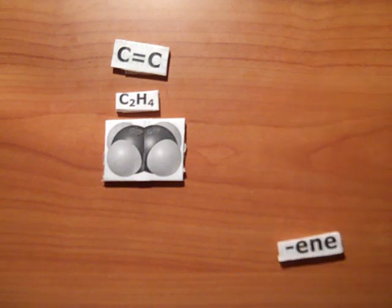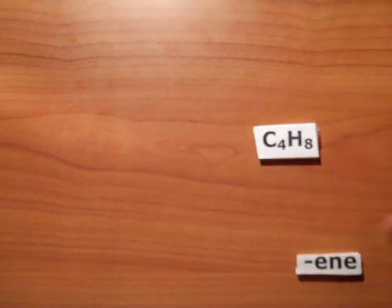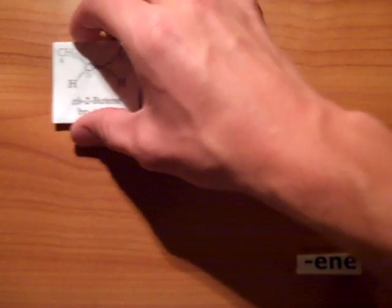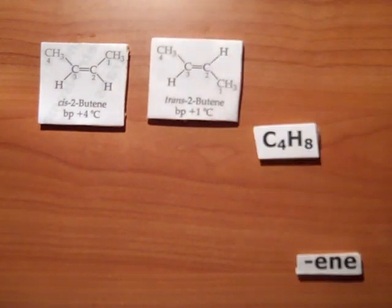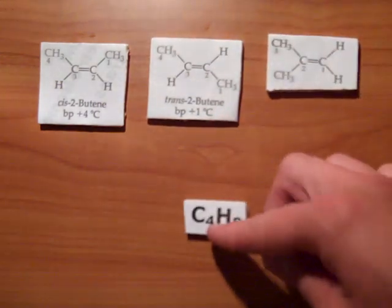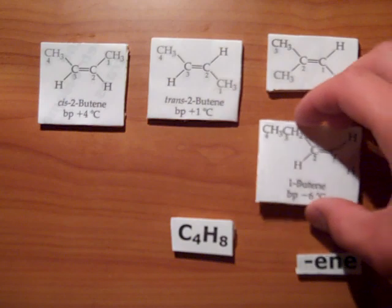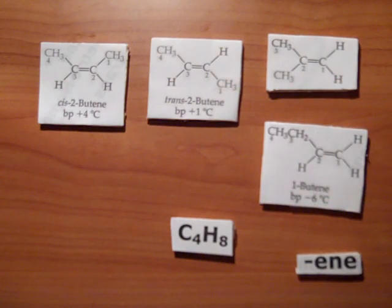Alkenes with four or more carbon atoms have several isomers for each molecular formula. Take, for example, the structural isomers of C4H8. Here we have one, here's another one, and another one, and another one. There are four possible arrangements for this one molecular formula.